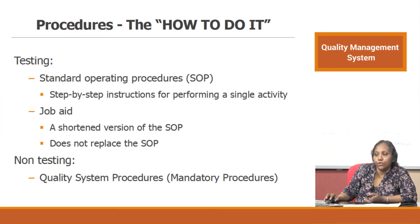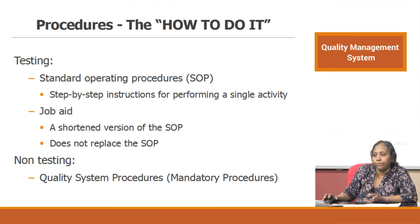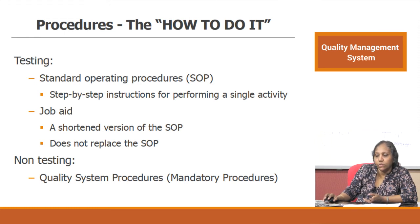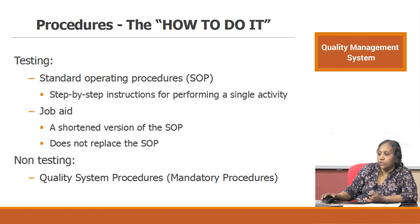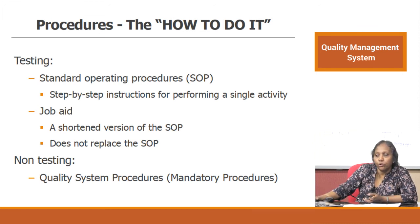Coming to procedures — how to do it. Policies tell you what to do, processes tell you how it happens, and procedures tell you how to do it. Testing procedures are generally depicted as standard operating procedures (SOPs) — a step-by-step instruction for performing a single activity. A job aid is a shortened version of an SOP. Non-testing procedures are called quality system procedures, mandatory procedures, or just procedures. So there are two kinds of how-to documents: testing (SOPs) and non-testing (procedures).